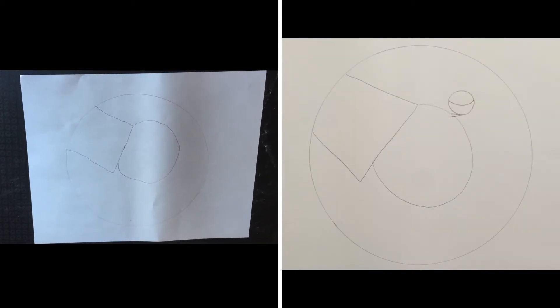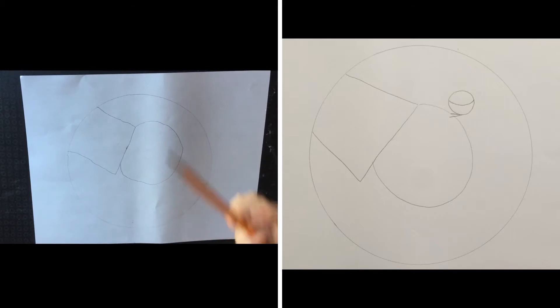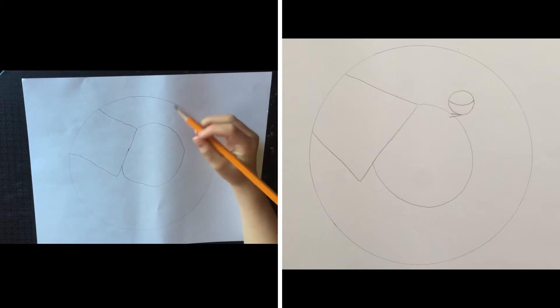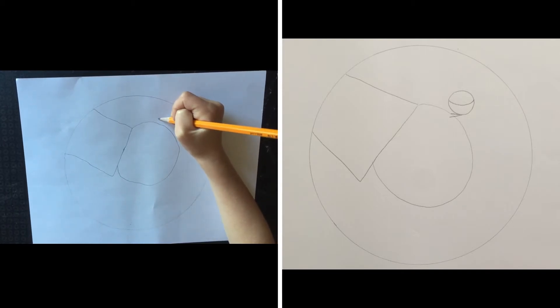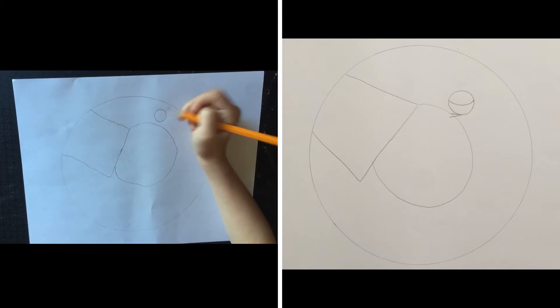Next, we're going to add an eye to our Piano Elephant. And this is a little circle that goes above his cheek somewhere.